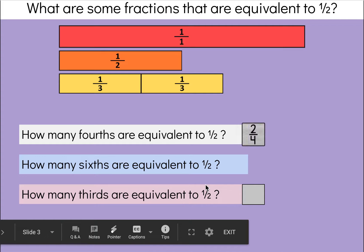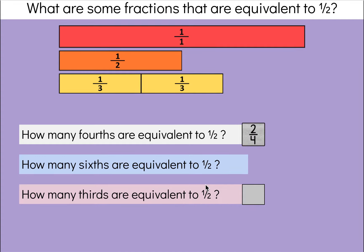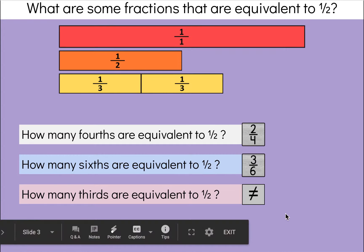So here's what the fractions would look like: two-fourths is equivalent to one-half, three-sixths are equivalent to one-half, and thirds are not equivalent to one-half. The symbol we use to show that something is not equivalent is an equal sign with a slash through it.